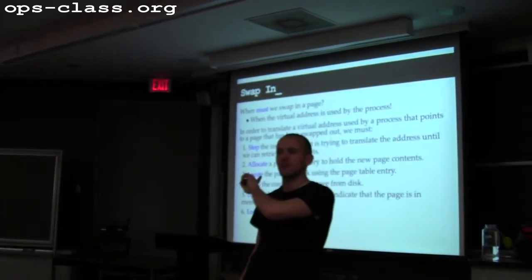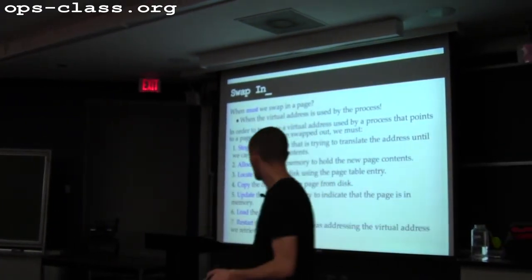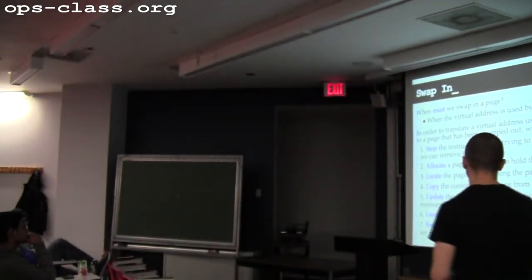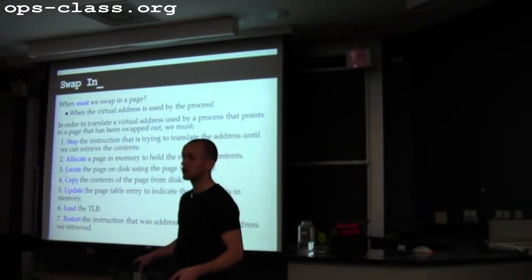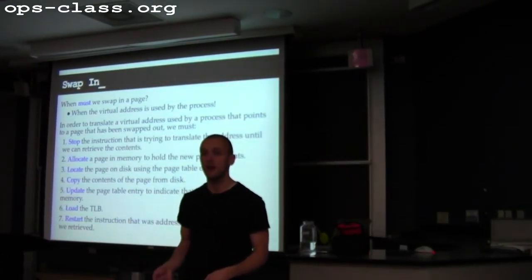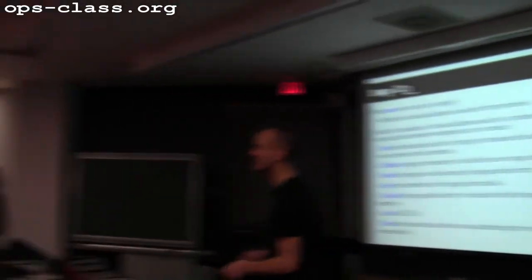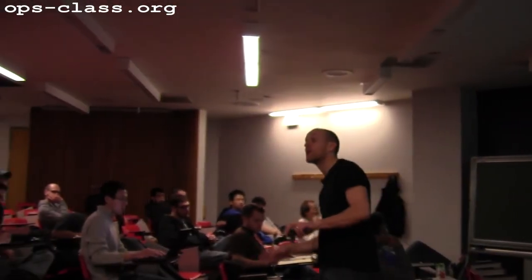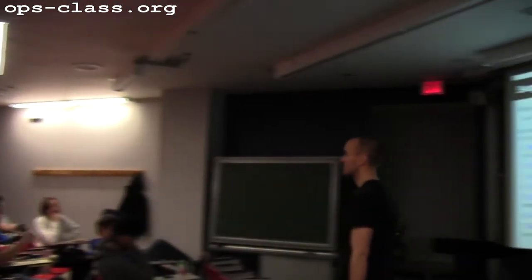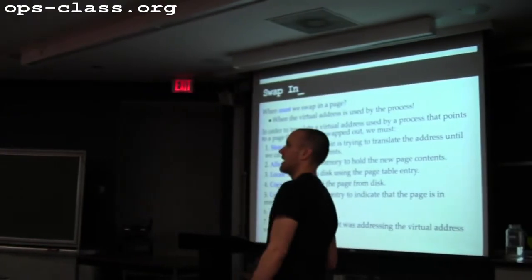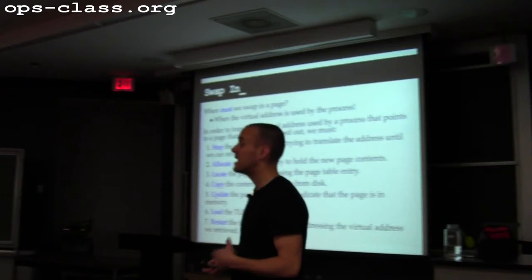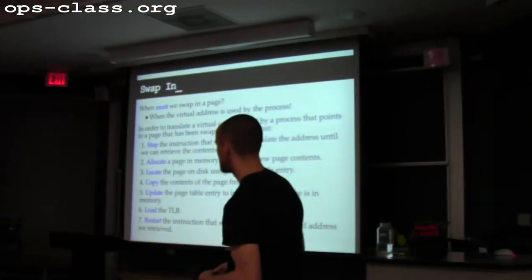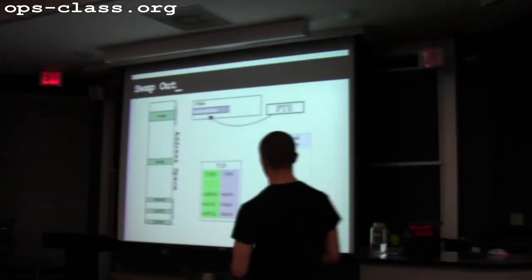Finally, I restart the instruction that was trying to address that virtual address. Now it's memory again — the illusion is restored. Because the illusion wasn't true when the instruction started to execute, I had to take time to recover it. Now the address is in memory and it will act like memory.